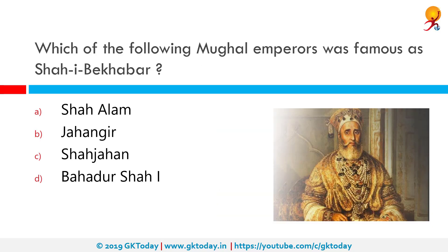Which of the following Mughal Emperors was famous as Shah-e-Bekhabar? The correct answer is Bahadur Shah I. Bahadur Shah, also known as Muhammad Muazzam and Shah Alam, was the 7th Mughal Emperor of India and ruled from 1707 until his death in 1712. In his youth, he conspired to overthrow his father Aurangzeb, the 6th Mughal Emperor, and ascended to the throne.